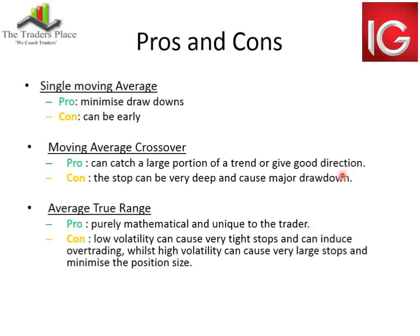If you're using your stop to calculate position size, a deep average true range stop is going to reduce the number of shares you get. Make sure the ATR stop makes sense to the trade and the position size. If you're trading long-term trends, ATR can be a great way to stay in the trend. If you're trying to trade really short-term and looking for 3% to 5% gains, average true range is normally too big a stop loss and throws out your risk-reward ratio.